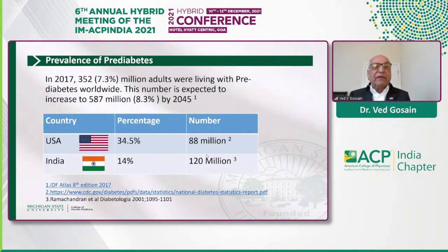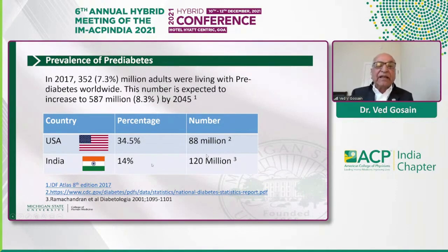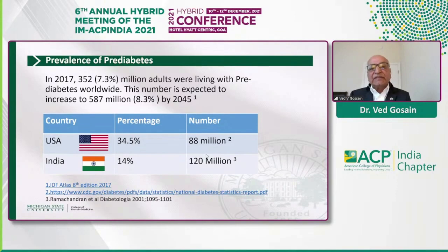For the prevalence of prediabetes, almost 352 million adults were living with prediabetes worldwide in 2017, and this number is expected to increase to 587 million people by 2045. So you can see it's a huge problem.